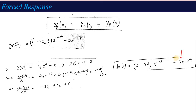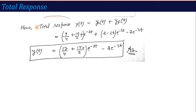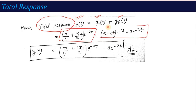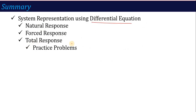We have now calculated both the natural response and the force response. The total response is y(t) = natural response + force response. Adding the two results gives the complete solution to the given differential equation. After this, the differential equation part is over. In the upcoming lecture, we will talk about discrete-time systems represented by difference equations — the same approach but in the discrete-time domain. Thank you.